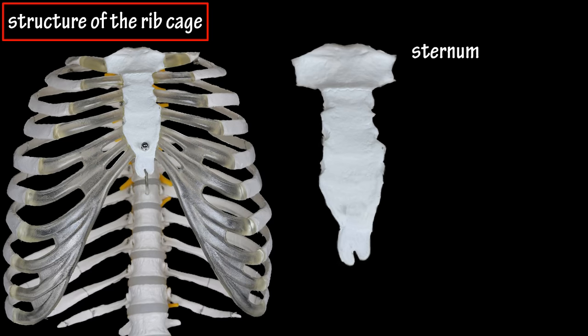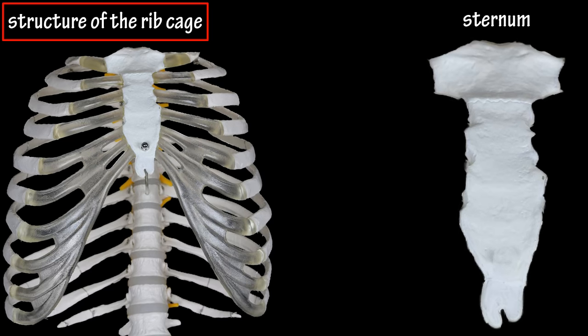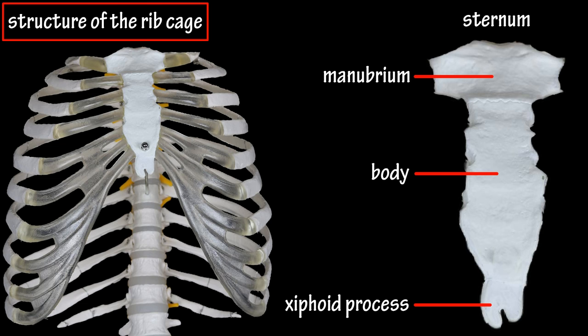The sternum, also called the breastbone, is located in the middle of your chest, and it is composed of three parts: the manubrium, which is the widest part at the top of the bone; the body, located in the middle; and the xiphoid process at the bottom.